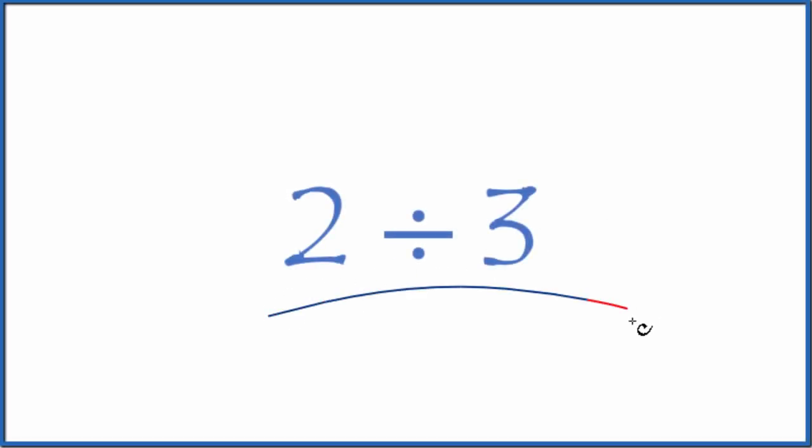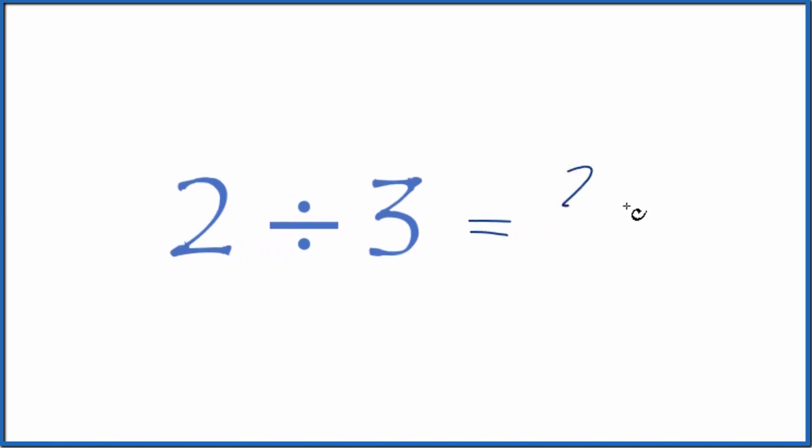Let's divide two by three. The first thing we can do is think of it as a fraction. So we could say we have two over three, two-thirds. So two-thirds, that's two divided by three.